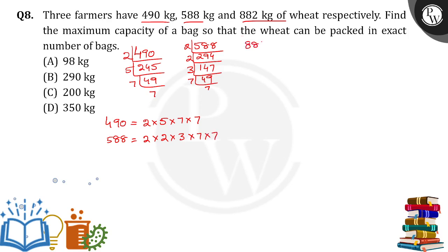Next number is 882. 882 can be cancelled by 2 table for 441 times and again by 3 table. 3 table cancels 441 for how many times? 147. Again 3 cancels for 49 times. Again 7, 7. So 882 is equal to 2 into 3 into 3 into 7 into 7.